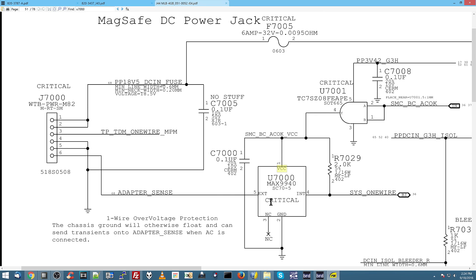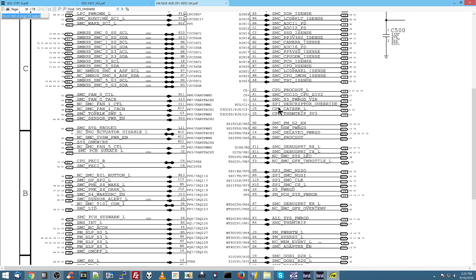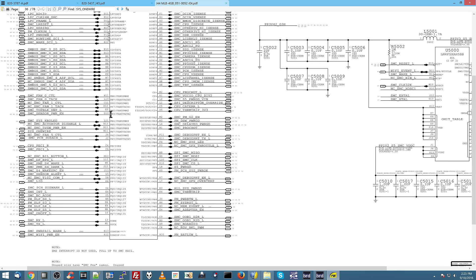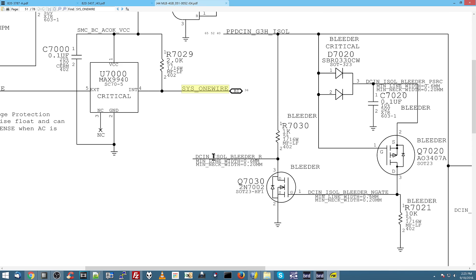Now, this chip allows the adapter external to talk to the SMC internal, the chip inside the computer. And then this chip over here, the SMC, via the SIS one-wire line, is going to allow the charger to talk to the computer. And the charger is going to say, I'm a computer, turn on, give it a light. And that's that.